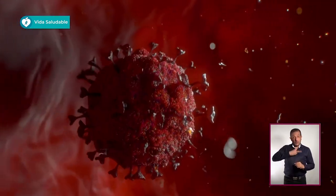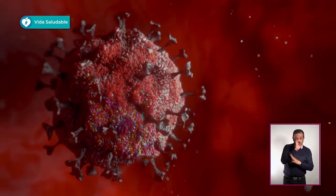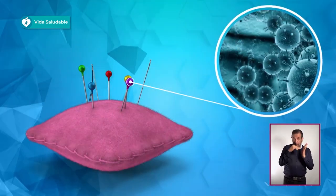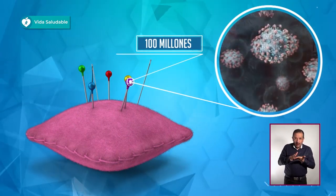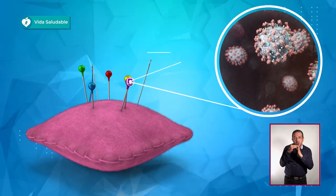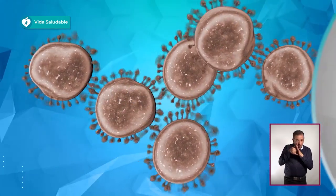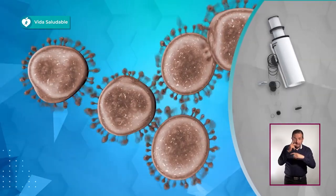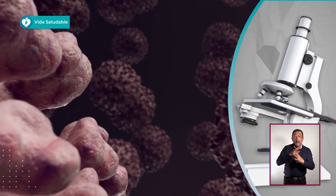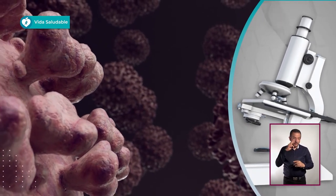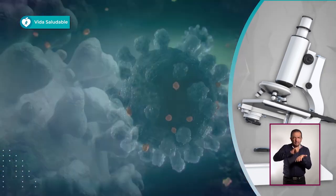Los virus son entre 10 y 100 veces más pequeños que una bacteria. En esa misma cabeza de alfiler en donde cabían un millón de bacterias, cabrían 100 millones, por ejemplo, del coronavirus. Los virus son cápsulas diminutas, casi invisibles, con material genético dentro de una capa de proteína. A veces están cubiertos por una capa de grasa y a veces no. Los virus que sí tienen esa capa de grasa son fáciles de eliminar con el lavado de manos porque el jabón disuelve esta capa.